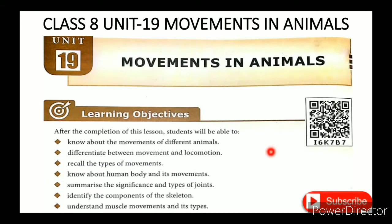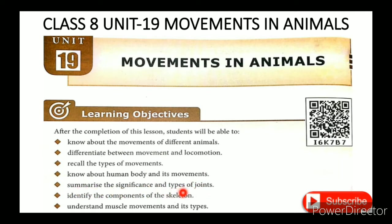Movement in Animals. In this lesson, the learning objectives are: know about the movements of different animals, differentiate between movement and locomotion, recall the types of movements, know about the human body and its movements, summarize the significance and types of joints, identify the components of the skeleton, and understand muscles, movements and its types.